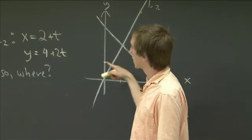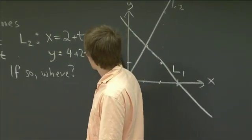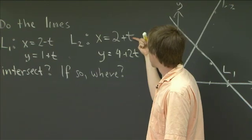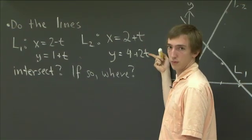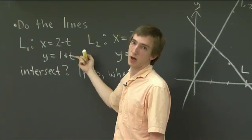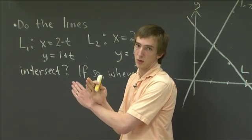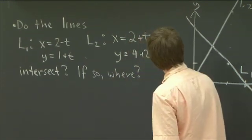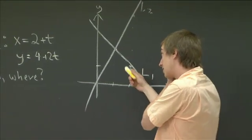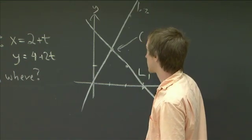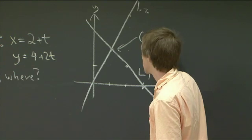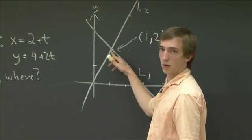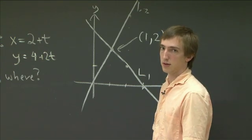We could have probably guessed that they intersect by looking at the formulas for L1 and L2, because we can take derivatives in t to find the direction each line moves. L2 is moving in the direction (1, 2), and L1 is moving in the direction (−1, 1). Those directions are not parallel, and the only way two lines could fail to intersect is if they're parallel. So even without drawing this, we could have guessed that these lines do intersect. From our sketch it looks like they intersect at the point (1, 2), but let's verify this in the general way discussed in lecture.